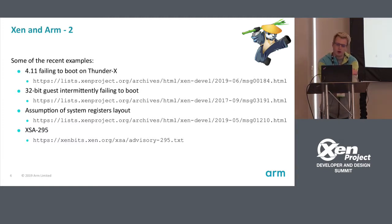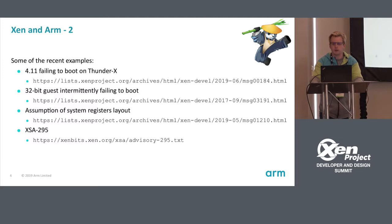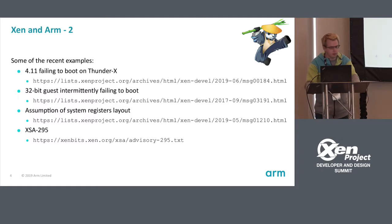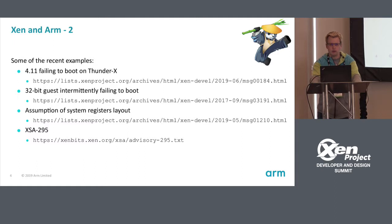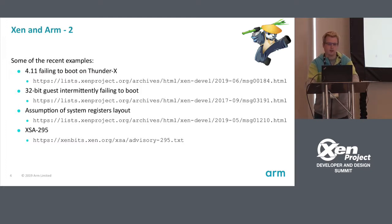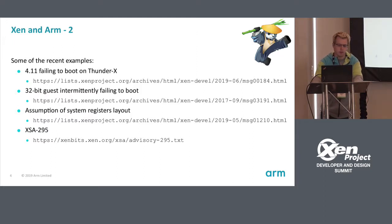Recently, we noticed some system registers we don't use correctly — we assume some bits are zero, but a newer revision of the architecture defines them to something else. The main one we've been working on is XSA-295, where we were using atomic operations unsafely on memory shared with a guest, which meant the guest could potentially delay or DoS them by just accessing the page at the same time.